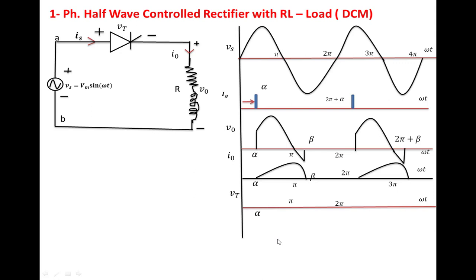Drawing the voltage across the SCR: from zero to α, no device is connected in the circuit, so the voltage across the SCR equals the source voltage. From α to β, the SCR is conducting, so the voltage across the SCR becomes zero. At β, the SCR turns off.